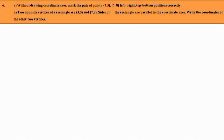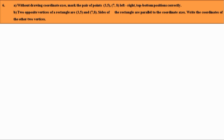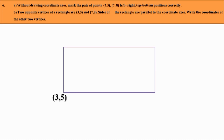Now, looking at the y-coordinates, 5 and 8: since 5 is less than 8, the point (3,5) is below the point (7,8). So, comparing to the point (3,5), the point (7,8) is to the right and above it. Given the two opposite vertices are (3,5) and (7,8), for the remaining vertices: on the horizontal line through (3,5), the x-coordinate changes to 7, giving the point (7,5). Similarly, on the vertical line through (3,5), the y-coordinate changes to 8, giving the point (3,8). Therefore, the other two vertices are (7,5) and (3,8).